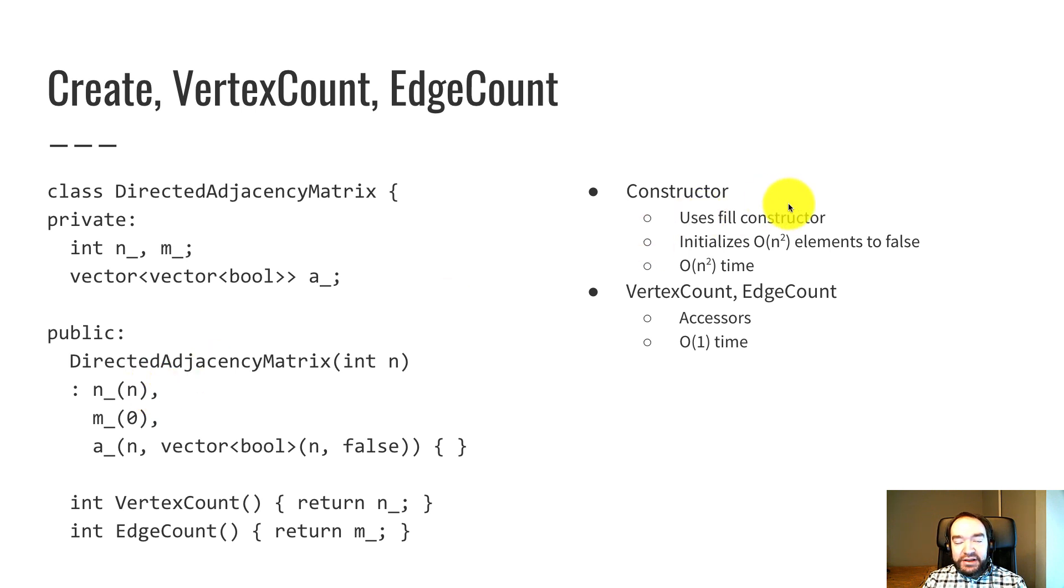And then we use the fill constructor to fill up a. This is kind of an idiom in C++. This is how you create an n by n matrix. I say initialize the outer vector a to be n copies of another vector of booleans that has n copies of false. So this vector boolean false creates an n element wide row that has n falses. And then I make n copies of that.